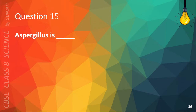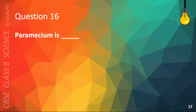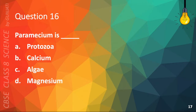Question 15. Aspergillus is: A. Plant, B. Fungi, C. Bird, or D. Bacteria. The correct answer is B. Fungi. Question 16. Paramecium is: A. Protozoa, B. Calcium, C. Algae, or D. Magnesium. The correct answer is A. Protozoa.